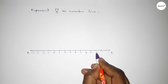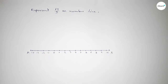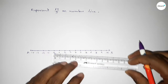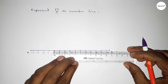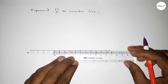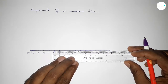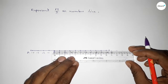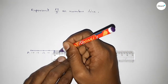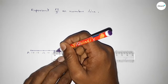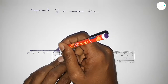Now we have to divide the distance between any two numbers into five parts. If you divide the distance between any two numbers into five parts, then the length of each part equals 0.2 units. So now first dividing the distance between zero and one.